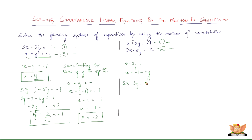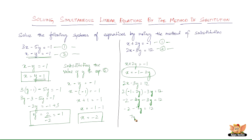So in equation 2: 2x minus 3y equals 12. In the place of x, write minus 1 minus 2y. So 2 times (minus 1 minus 2y) minus 3y equals 12, which gives minus 2 minus 4y minus 3y equals 12. So minus 2 minus 7y equals 12, meaning minus 7y equals 14, and therefore y equals minus 2.